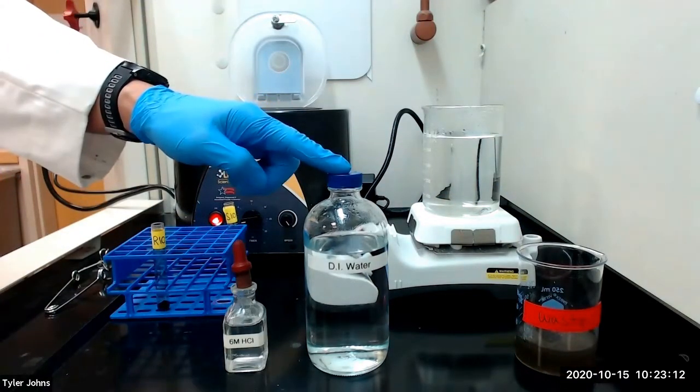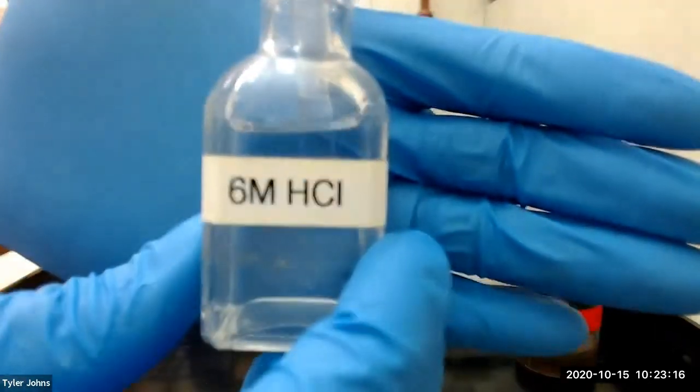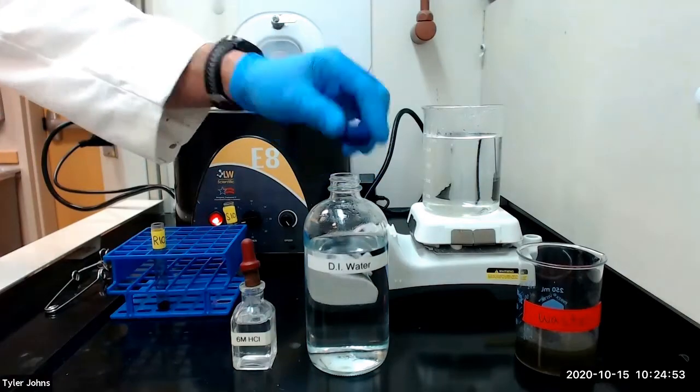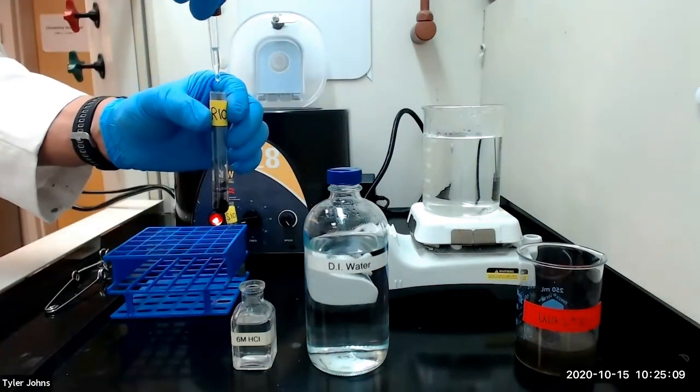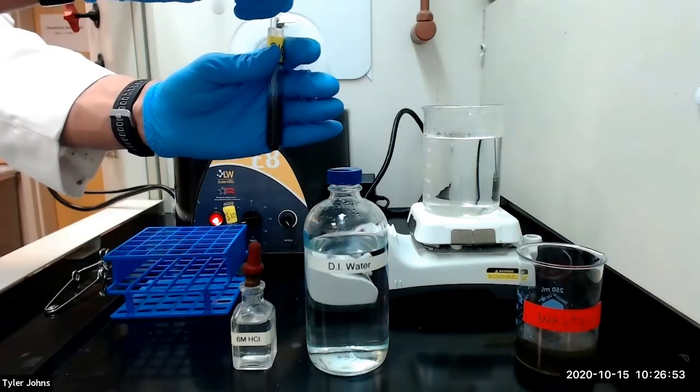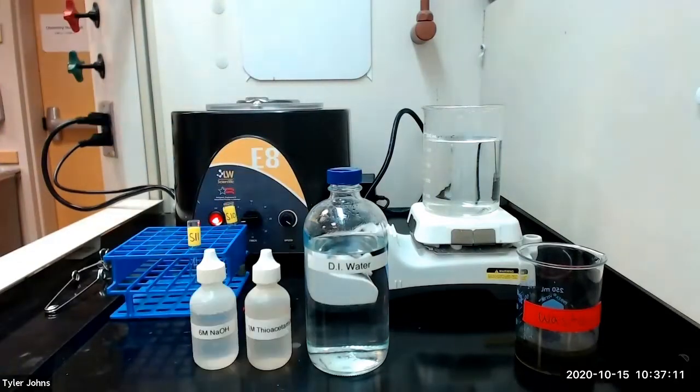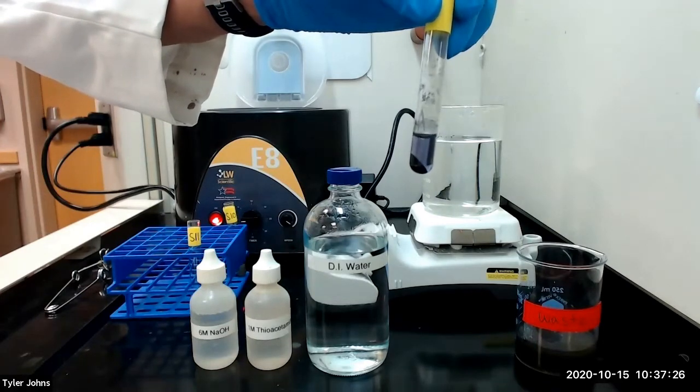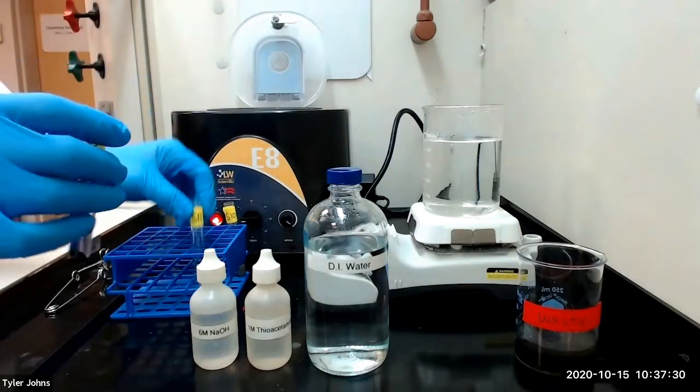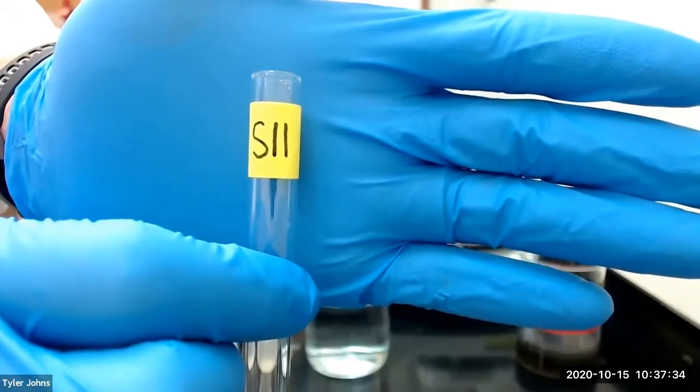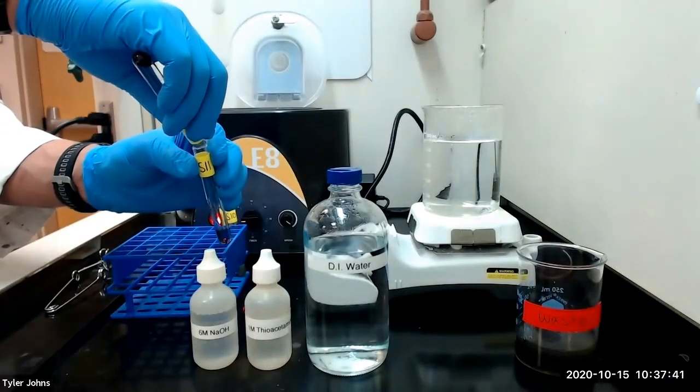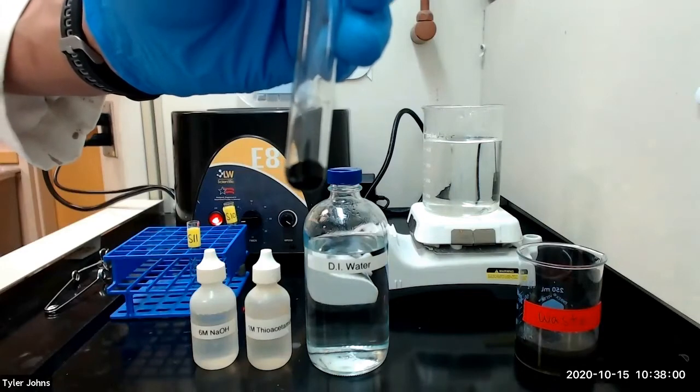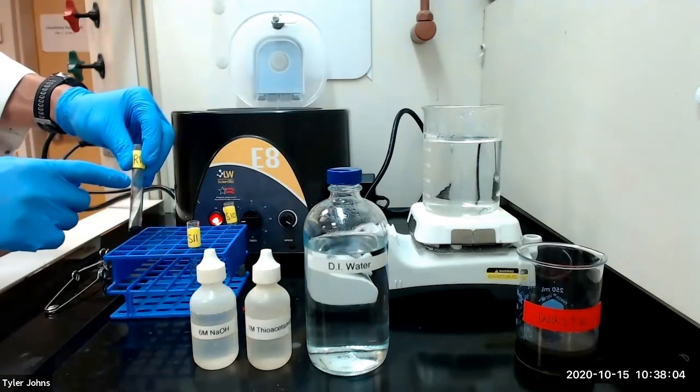We will next add 1 milliliter of deionized water and 2 drops of 6 molar hydrochloric acid to residue R10. We will stir for 1 minute and centrifuge. This is what our mixture looks like after centrifugation. We will now decant the solution into a new test tube labeled S11. We will save the residue for analysis of nickel and relabel the residue as residue R11.